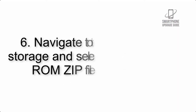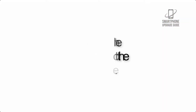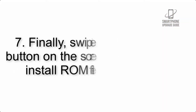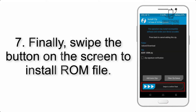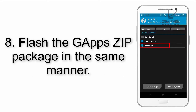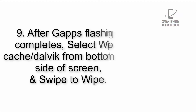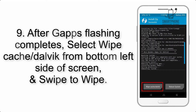Step 5: go back to the recovery main screen and tap on the Install button. Step 6: navigate to the storage and select the ROM zip file. Step 7: swipe the button on the screen to install the ROM file. Step 8: flash the GApps zip package in the same manner.